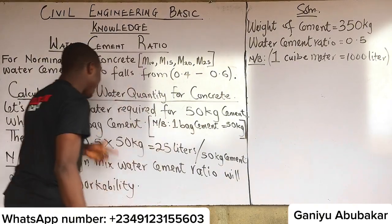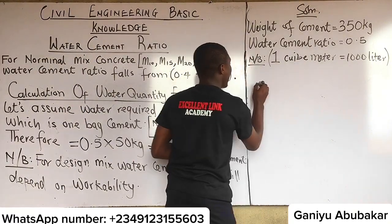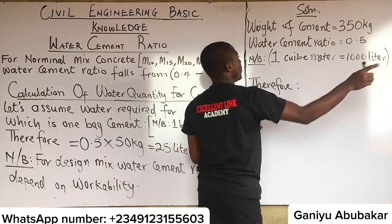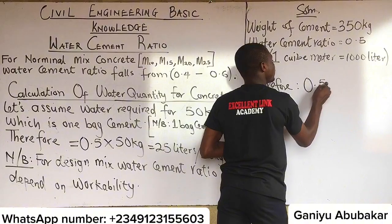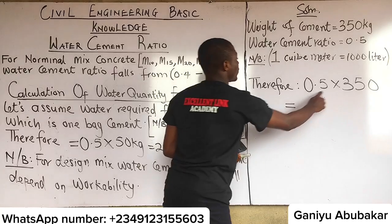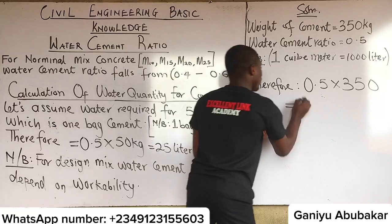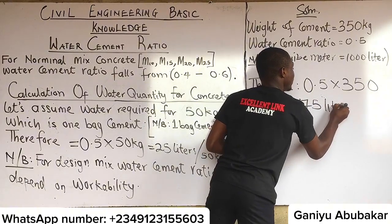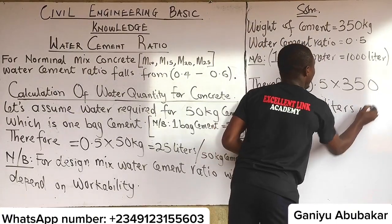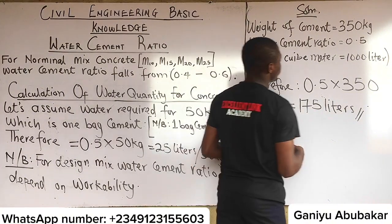The approach is simple: multiply the weight of cement by the specified water cement ratio. Therefore, 0.5 × 350 = 175 liters. So 175 liters of water are required to mix 350 kg of cement.